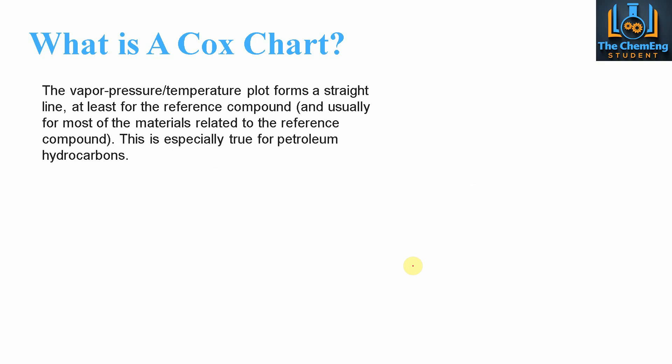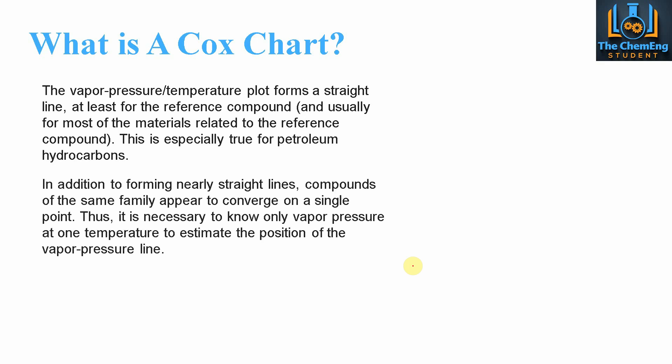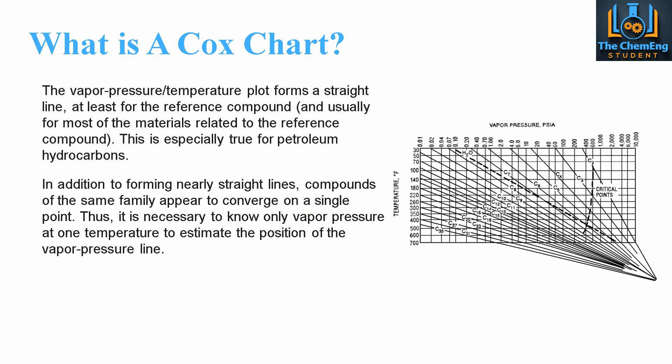There are different Cox charts for different types of compounds — organic compounds, inorganic compounds, gases, ideal gases, liquids — it just depends on your system and your reference material. In addition to forming nearly straight lines, compounds of the same family tend to converge on a single point. Therefore it is necessary to know only the vapour pressure at one temperature in order to estimate the position of the vapour pressure line, which becomes very convenient when working with compounds within the same family.